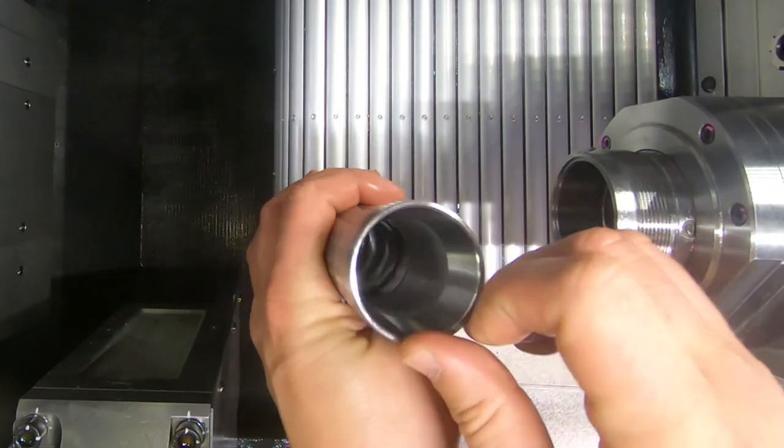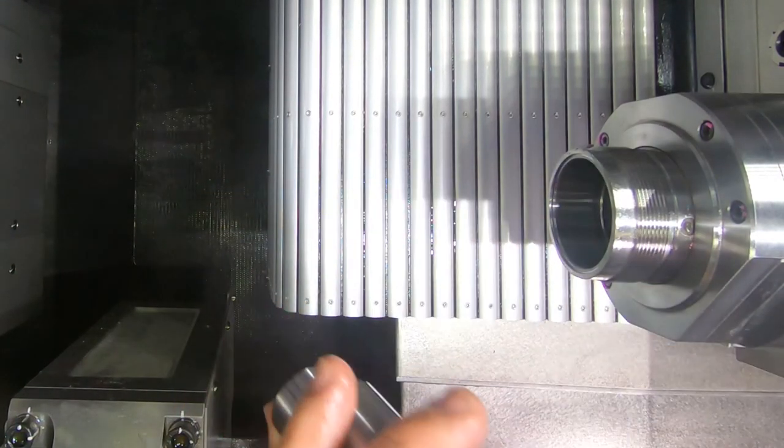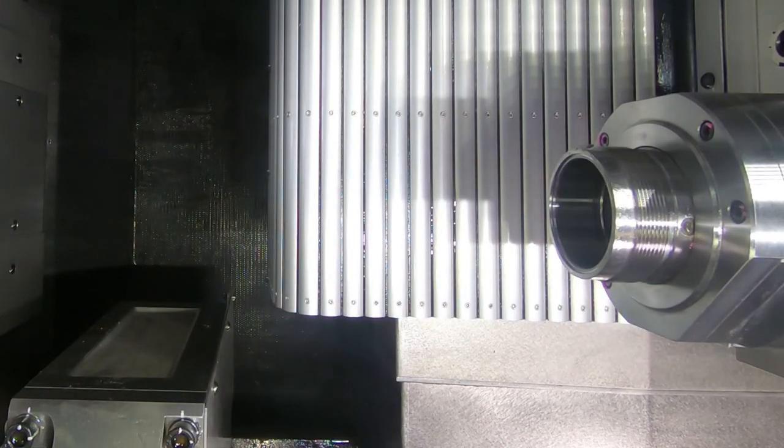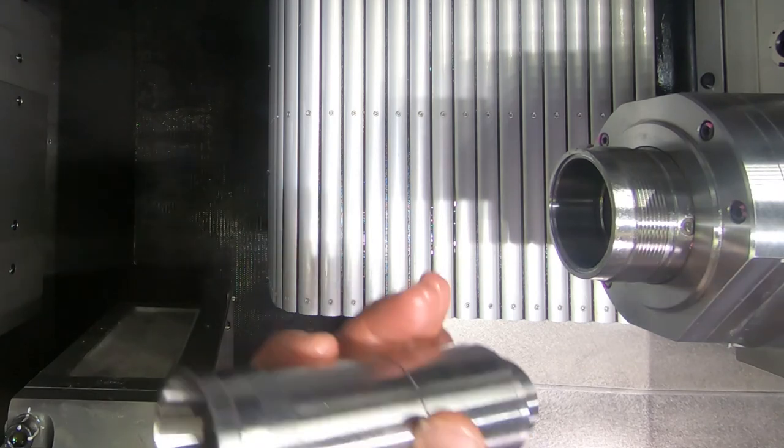So now that we have this out, we can take our sleeve out and we can clean this out outside the machine. We can spray it out, whatever we need to do. Clean our spring and everything else and then we can go ahead and put everything back together.